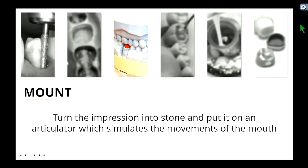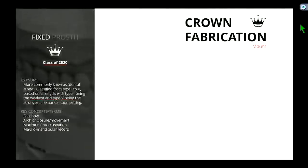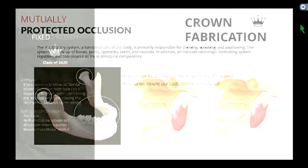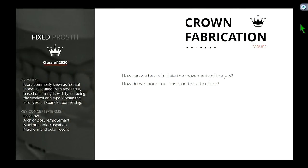Yesterday we went through all the procedures up to the casting part. What we glossed over was how do we mount our maxillary casts onto our articulators. So hopefully some of you brought yours today, and we'll go over a few exercises to visualize some of this stuff. The key questions we want to ask are: how can we best simulate the movements of the jaw, and how do we mount our casts onto the articulator?